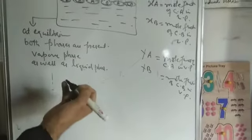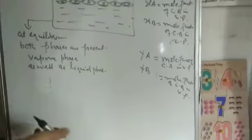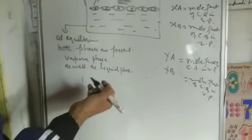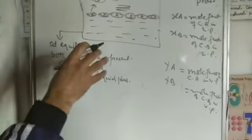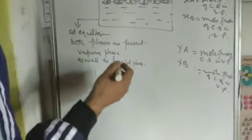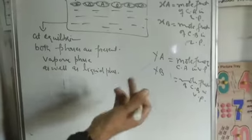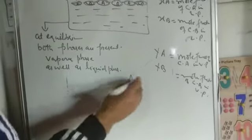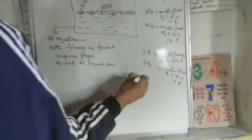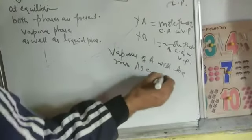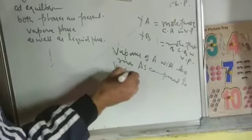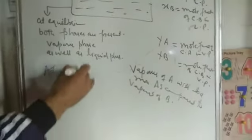Pressure is because of the vapors at the stage of equilibrium. The pressure created by the vapors over the surface of the liquid or on the walls of the container is called vapor pressure. Component A is more volatile as compared to B, that means vapors of A will be more as compared to vapors of B.